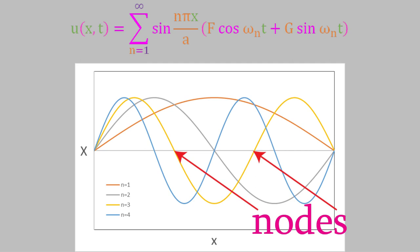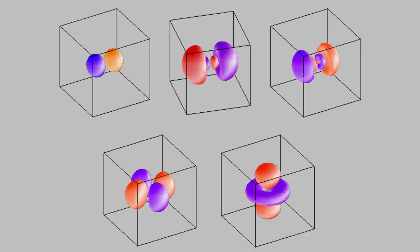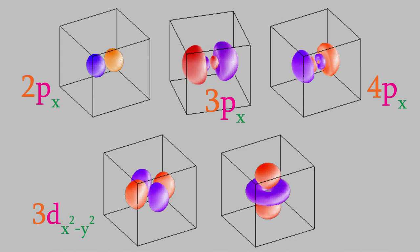What does this equation actually tell us about moving waves, and what can we learn from it about wave functions? As a sneak preview of results from a future video: if we plot this equation in three dimensions with appropriate boundary conditions, we get some familiar shapes depending on the values of the constants. These are the 2px, 3px, and 4px orbitals, and the 3d(x²−y²) and 3dz² orbitals you've probably seen in your earliest chemistry course. As we learn more about wave functions, we'll see how this generic wave equation connects to the shapes of orbitals.